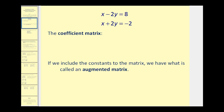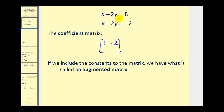If we have a system of equations, we can form an augmented matrix by first starting with the coefficient matrix. We take the coefficients of the x and y terms and form a matrix, where the first column contains the coefficients of the x terms and the second column contains the coefficients of the y terms. The coefficient matrix of this system would be a 2 by 2 matrix, where the first row is positive 1 and negative 2, and the second row is positive 1 and positive 2.